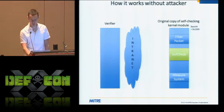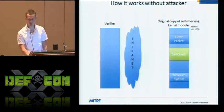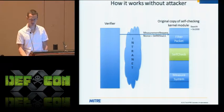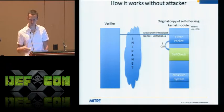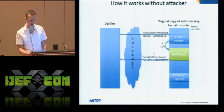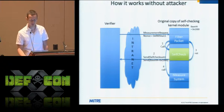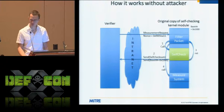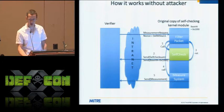So this is what the self-checksum looks like in the normal case: the server sends the measurement request including the nonce, the client receives it, does the self-checksum, and sends results back to the server. The server says: your self-checksum is good, it took the expected amount of time, so I believe you. Then the system also does a measurement of NTOS kernel, sends that back, and the server says NTOS kernel looks good and I believe what you're telling me about it because your self-checksum was good as well.